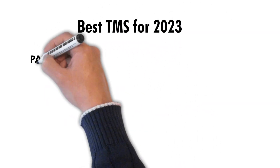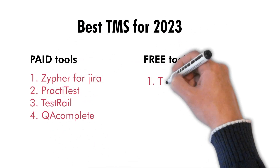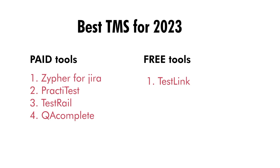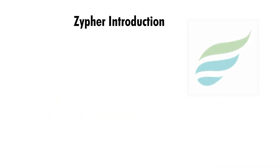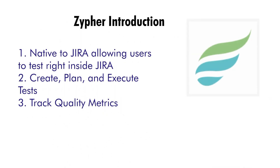There are many test management software options in the market — some are paid and some are free. The best paid software of 2023 includes Zephyr for Jira, PractiTest, TestRail, and QA Complete. You can also go for open source software like TestLink. Zephyr for Jira is a native application that exists in Jira and brings quality test management capabilities to any Jira project. When Zephyr is used with Jira, tests can be created, viewed, and executed immediately as part of a testing cycle linked to other issues.